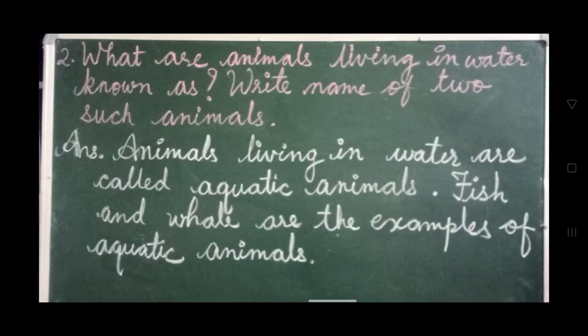Number 2: What are animals living in water known as? Write the names of two such animals. Answer: animals living in water are called aquatic animals. Fish and whale are examples of aquatic animals.